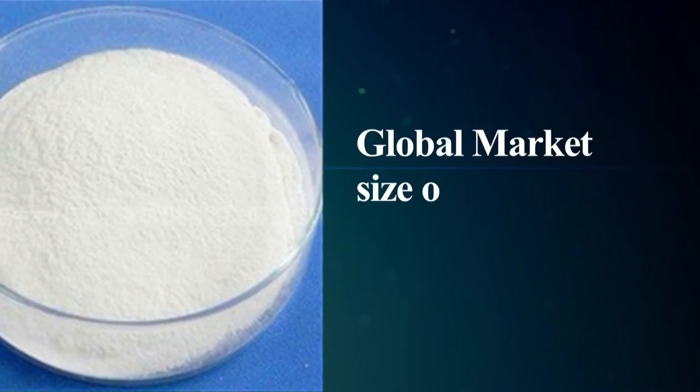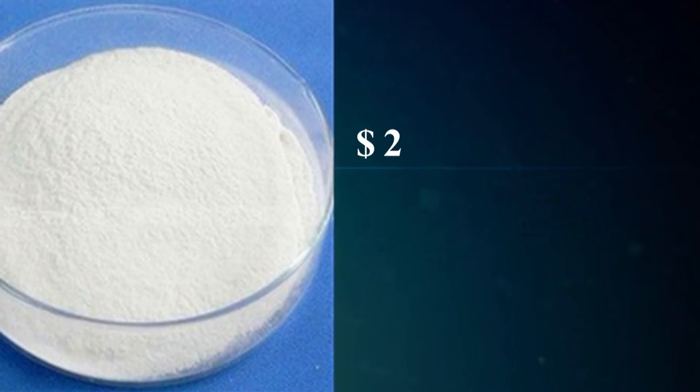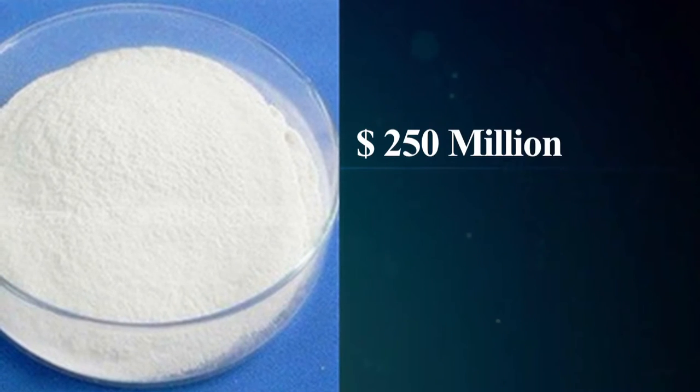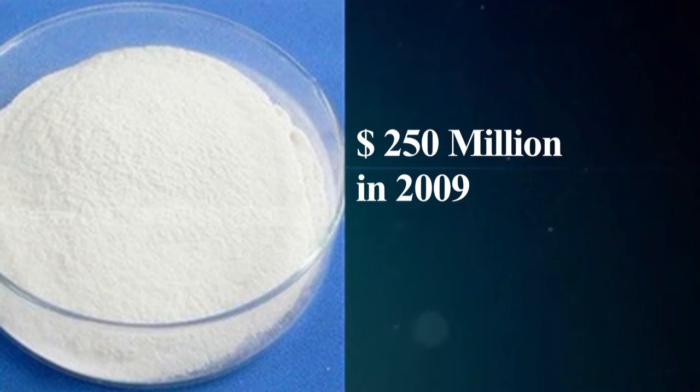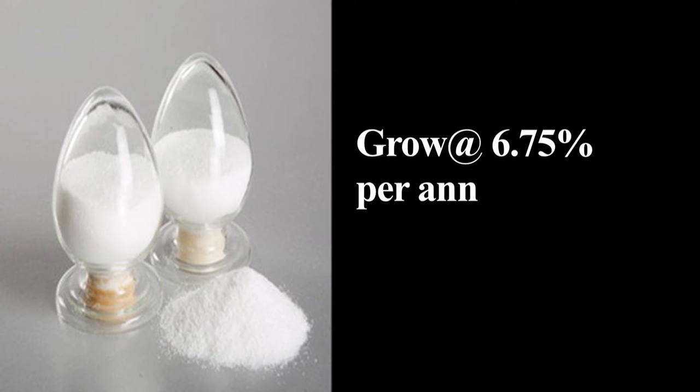The global market size of pullulan was 10,000 TPA, that is $250 million in 2009. It was expected to grow at 6.75% per annum.